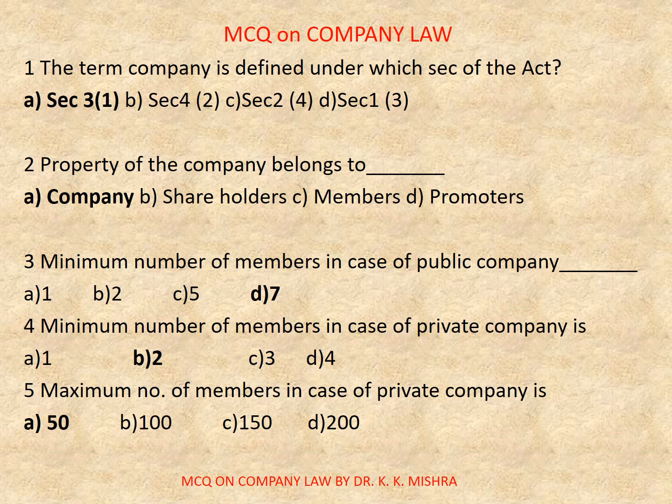Question number 2: Property of the company belongs to — Options are: A) Company, B) Shareholders, C) Members, D) Promoters. Correct option is A, Company.